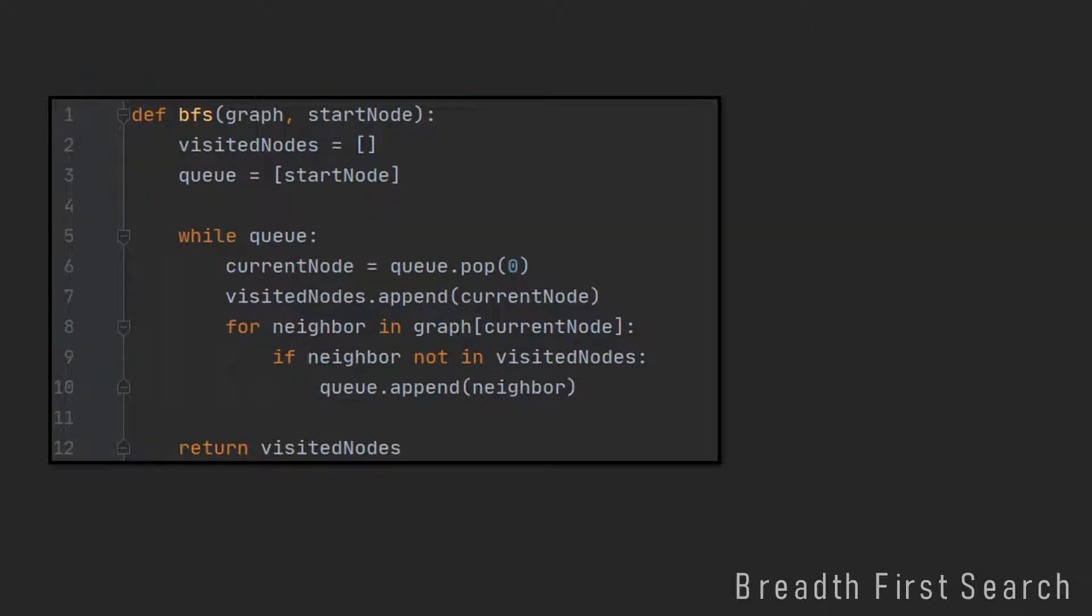Now let's get into the function for BFS. This is pretty short. BFS takes only two parameters, the graph and a start node. At the end we want to return this list of visited nodes, so at the beginning we initialize it with an empty list. Then we use another list to implement our queue. There are certainly better ways, but I just want to keep it simple.